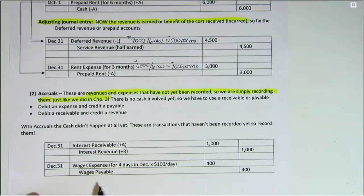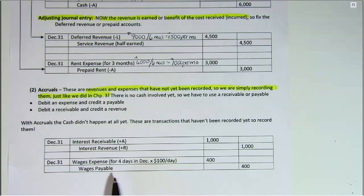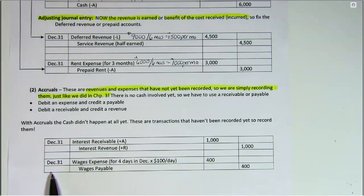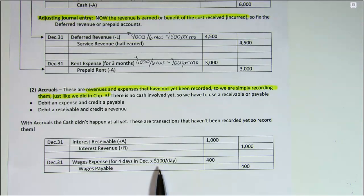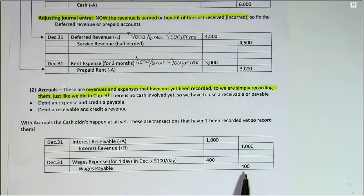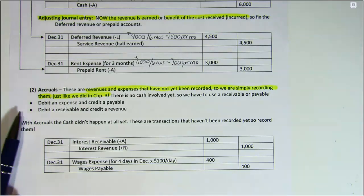In our example below, we have wages that are due to our employees. Why haven't we paid them? Because it is not payday yet. But we want to make sure we get their wages recorded in the month of December. So we calculate their wages — how many days they've worked since the last pay period times how much per day — and we'll debit wages expense and credit wages payable. These are called accrual adjustments.